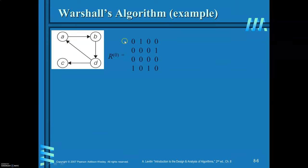Now we will see how to write the adjacency matrix for this graph. From A there is only one outgoing edge going to B, so write it as 1, remaining all 0. From B there is only one outgoing edge going to D — write it there. From C there is no outgoing edge, all equal to 0. From D there are two outgoing edges going to A and C. So there are 4 edges total, and in the adjacency matrix we also have 4 ones.